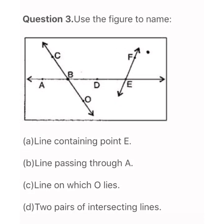Question 3: use the figure to answer the following — line containing point E, line passing through A, line on which O lies, and 2 pairs of intersecting lines. Observe the figure and answer. A line containing point E: the lines containing point E are line AE and line FE.